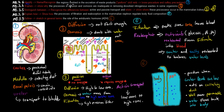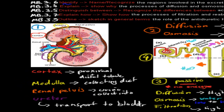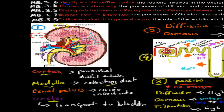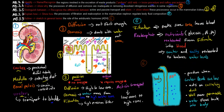The next dot point says 'identify' — name and recognize — the regions involved in the excretion of waste products. It also includes a practical experiment, so you need to know the procedure and safety precautions for the dissection. The key structures are the cortex and the medulla. The cortex contains the proximal and distal tubule and the glomerulus — where reabsorption and introduction of urea into the nephron occurs. The medulla pyramids contain the collecting ducts. The renal pelvis is where all collecting ducts join together, and the ureter is the pipe carrying urine down towards the bladder, from where it is removed.